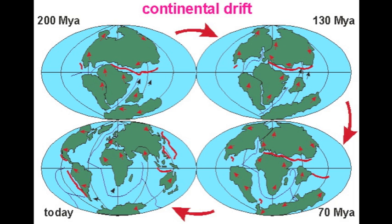He saw that the continents seemed to fit together like a puzzle and were once joined into a single landmass called Pangea. His theory also explained why the same animal and plant fossils are found on different continents. However, with no proof to explain how the continents moved apart, his theory was firmly rejected.